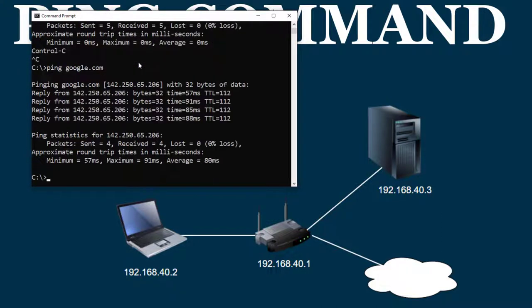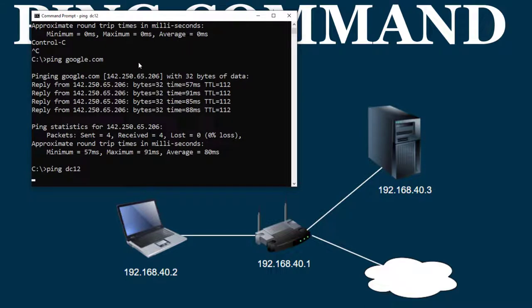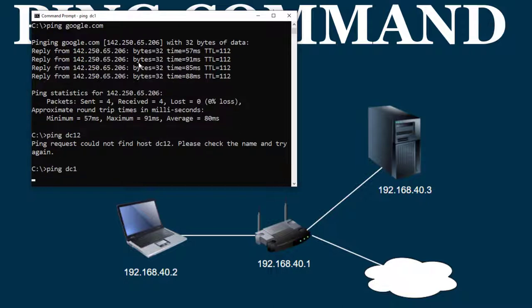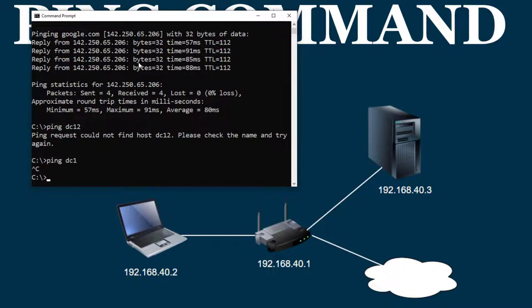If there's a DNS record for it, the name resolves. For example, if I ping DC12, it gets nothing back because there is no DC12. But ping can also be used to test your DNS resolution — if my 40.3 server had a DNS record I could ping it by name, like DC1. Since there's no DNS record for it, it won't respond.